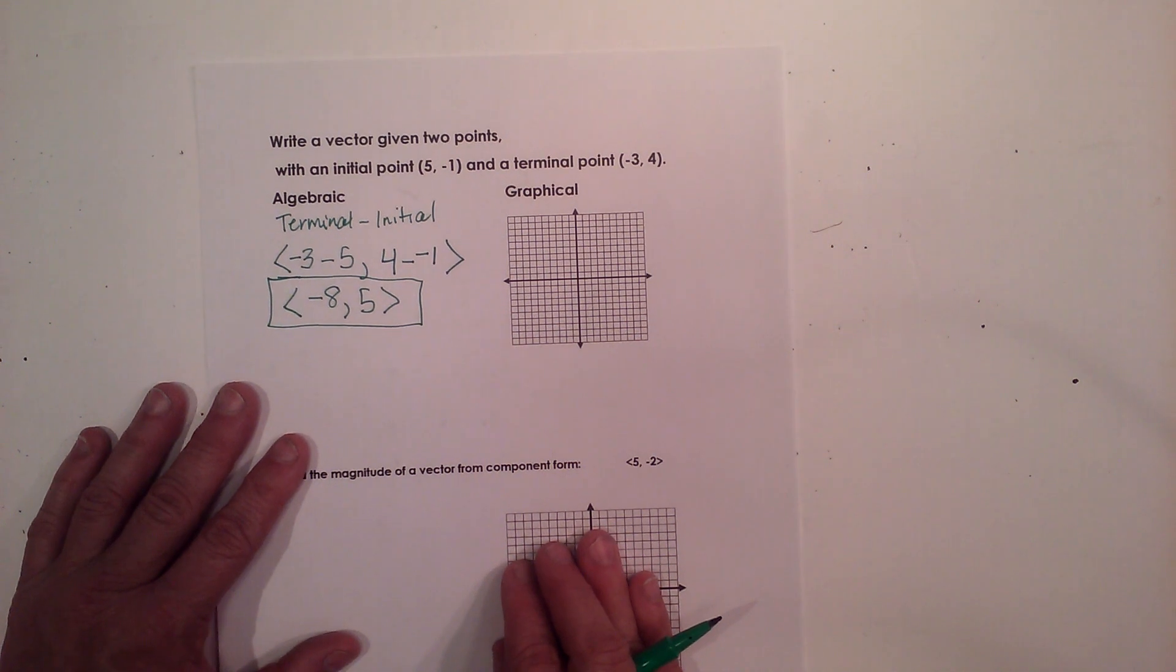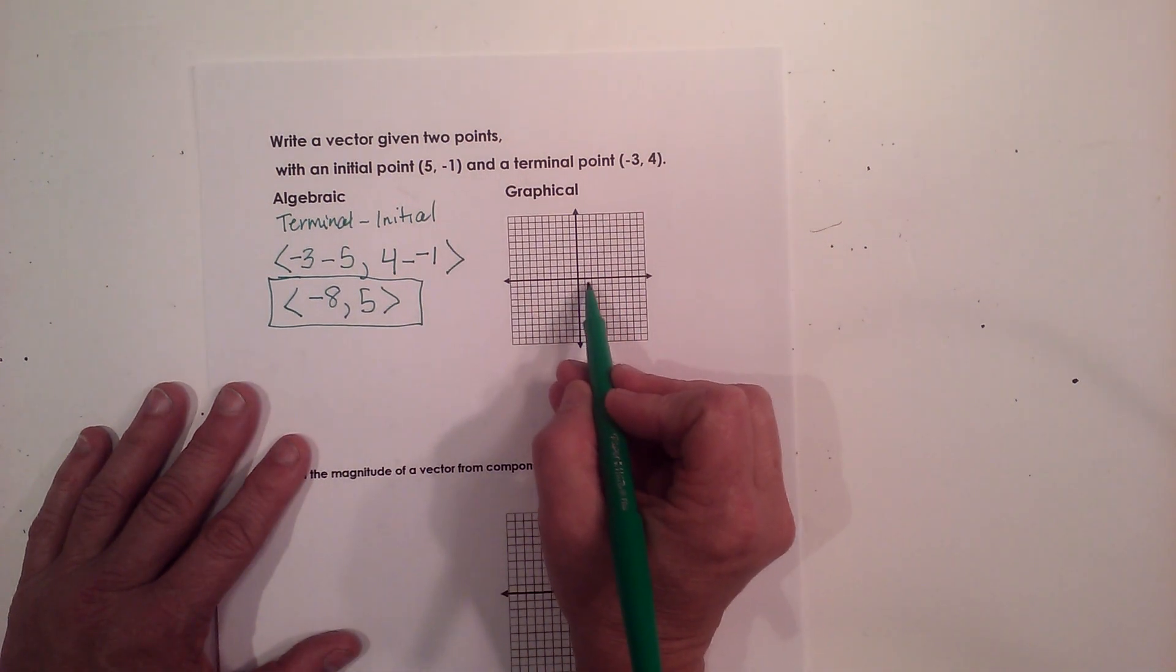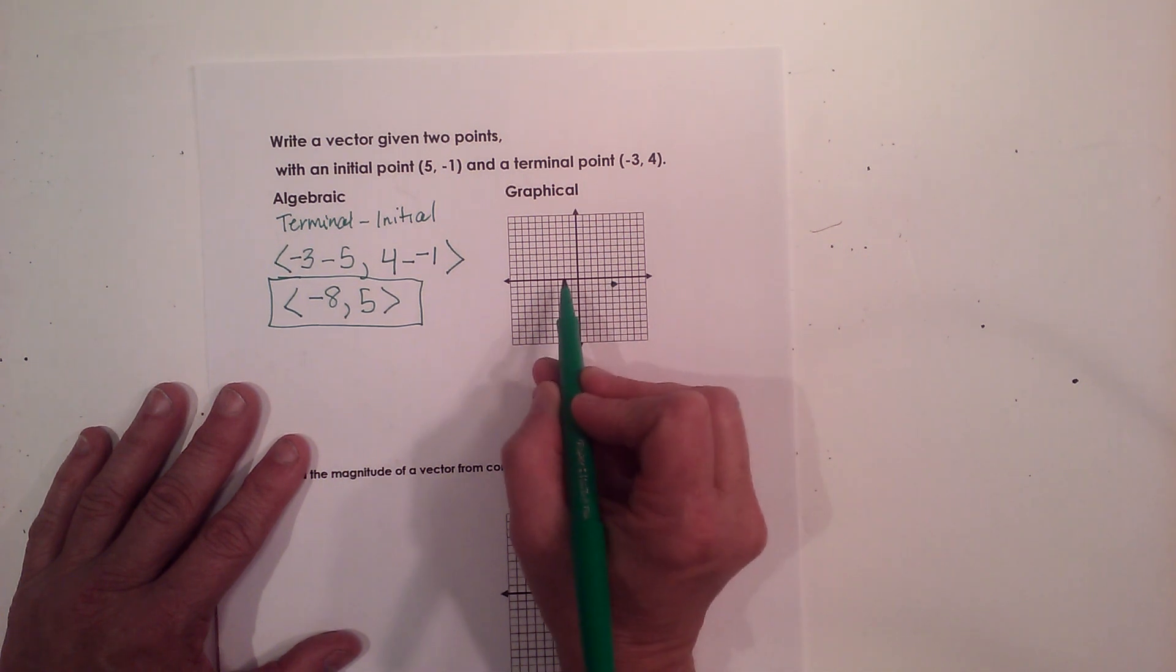What if I want to do it graphically? Well, I'm going to plot these two points. Now I'm going to plot the point 1, 2, 3, 4, 5, -1, and plot the point -3, 1, 2, 3, 4.